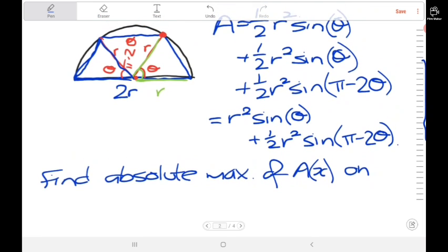Now what's the smallest angle we could have? That's if we don't have one at all, so zero. And the largest is the point at which these two points meet, which is if we had the point all the way up here, so pi over 2. We're finding the absolute maximum of this function where theta is between zero and pi over 2.